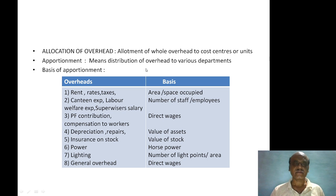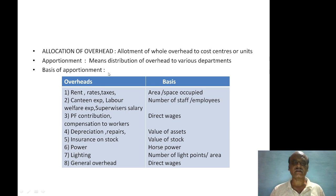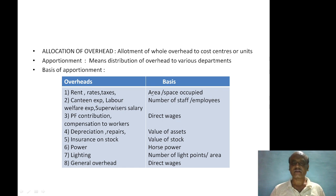The basis of apportionment: overhead such as rent, rates and taxes is apportioned on the basis of area occupied or space occupied by each department.